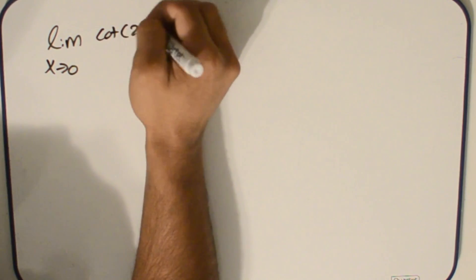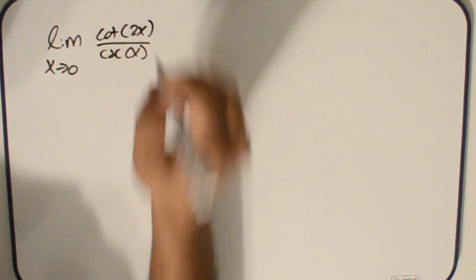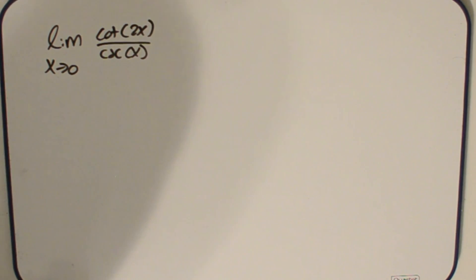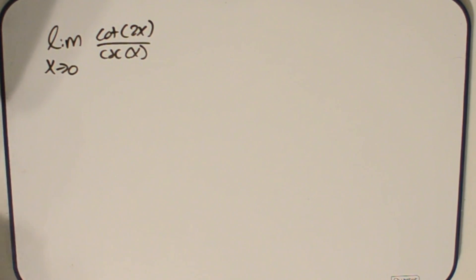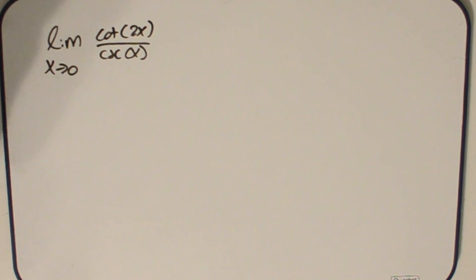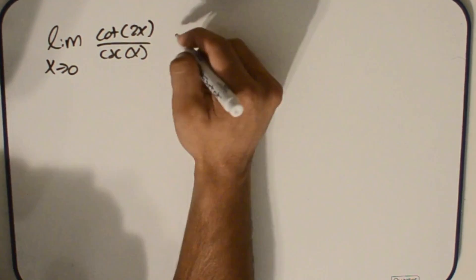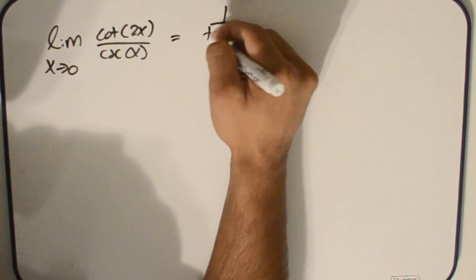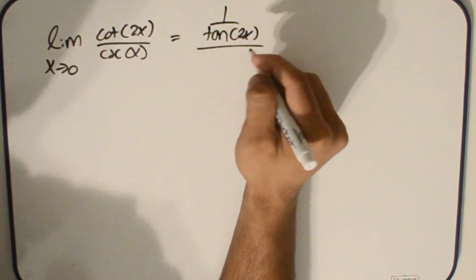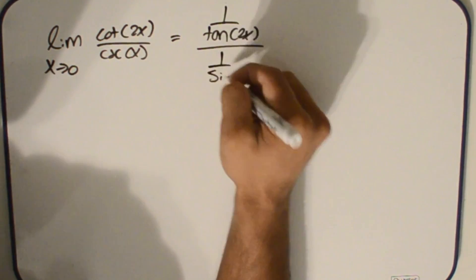Moving on to our next problem, which looks a little more complicated but is really the same idea. We have the limit as x approaches 0 of cot 2x over csc x. When I look at this, the first thing I notice is that these are compound trig functions containing sine and cosine. The first step is to break them down: cotangent is 1 over tan 2x, and cosecant is 1 over sine x.